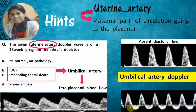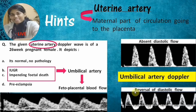In this next umbilical artery Doppler waveform, the flow in diastole has just reversed — this is reversal of diastolic flow. Here the fetus has severe hypoxia, suggesting impending fetal demise. The only treatment option left is urgent caesarean section.